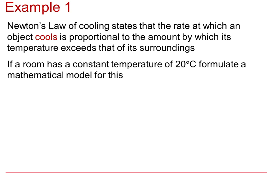First, we would want to identify or define the variables and constants in the question. We will let temperature, written capital T, be temperature at time t, written as small t. Then we know that the excess temperature will be T minus 20 degrees C, as 20 degrees C is the constant temperature of the room.